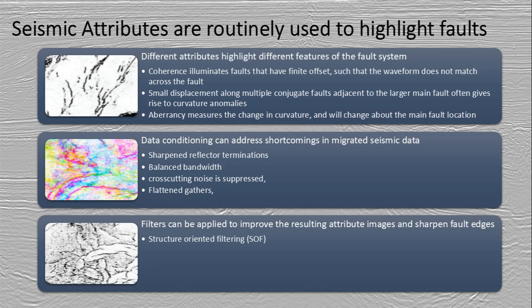There's a variety of seismic attributes — from coherence to curvature and aberrancy — which can be used to highlight faults. You also want to make sure that you do proper data conditioning of your seismic data to address shortcomings in migrated seismic data, and this could range from sharpening your reflector terminations,